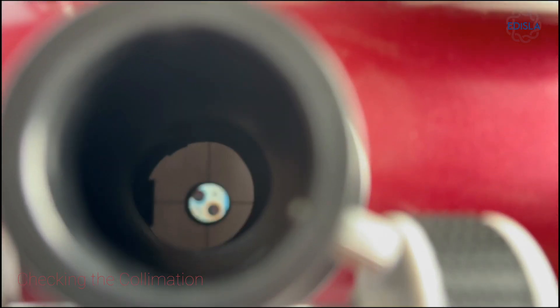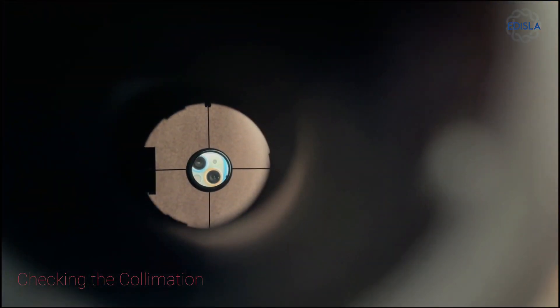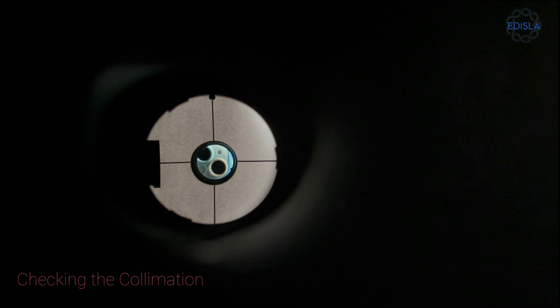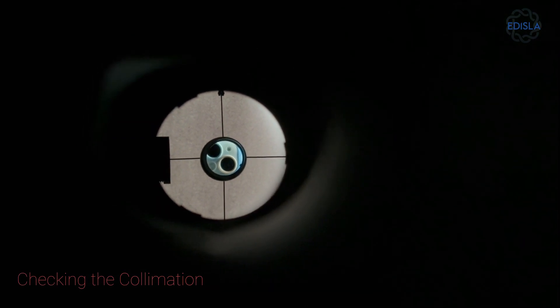You should see your eye where the camera would be. A properly collimated telescope presents a clear outer circle, a distinct inner circle, and four equal quadrants.